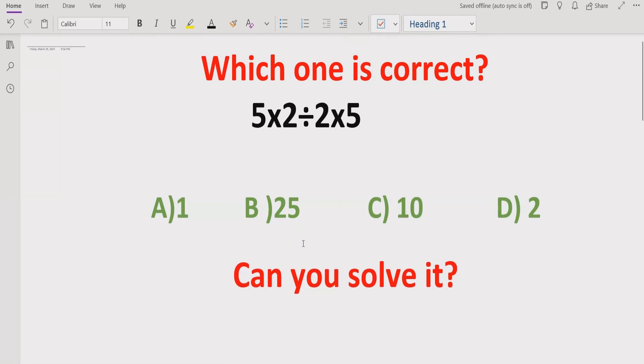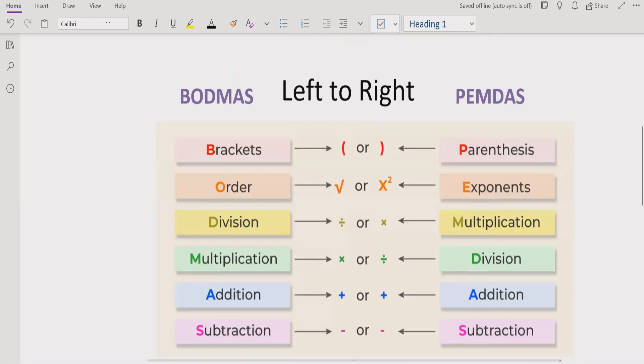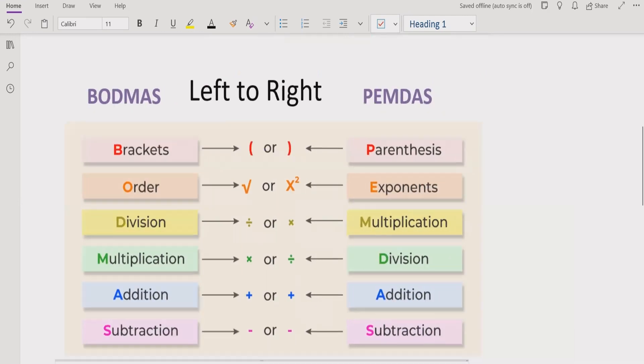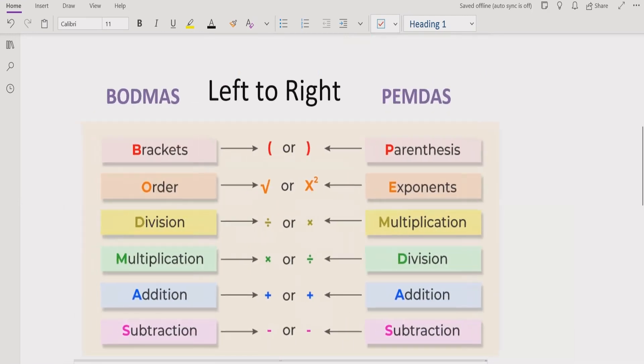Now let's recall what is BODMAS and PEMDAS method. As you can see on the screen, we have BODMAS - B for bracket, and PEMDAS - P for parenthesis. Either you are using BODMAS or PEMDAS, it is the same. Any route you follow, the answer will be the same.